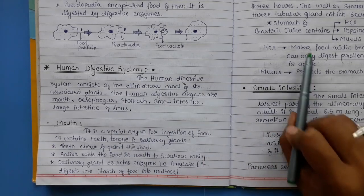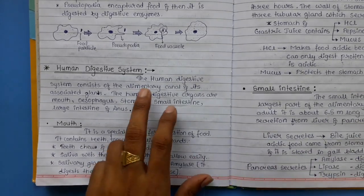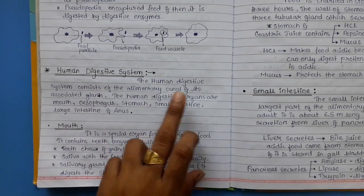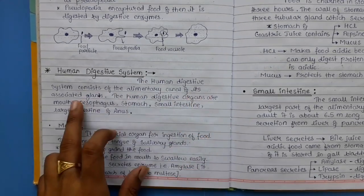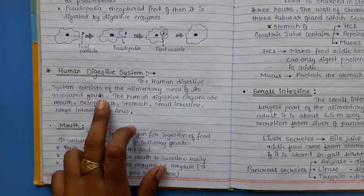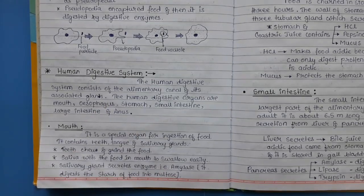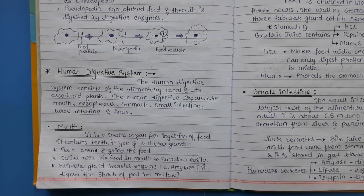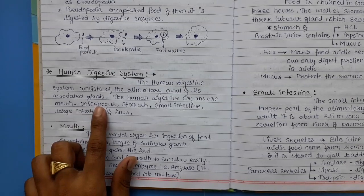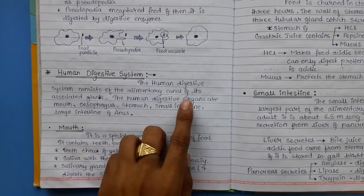Let's start. Mouth: it is the special organ for ingestion of food. It contains teeth, tongue, and salivary glands. Teeth chew and grind the food. The tongue wets the food in the mouth to help swallow it easily.